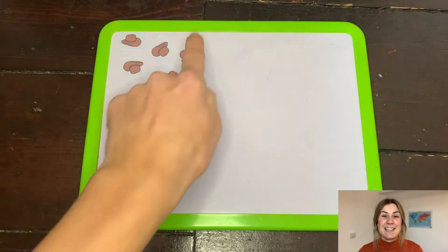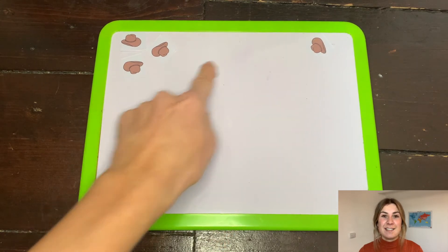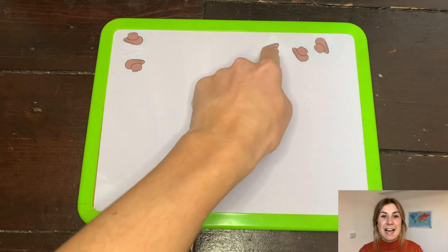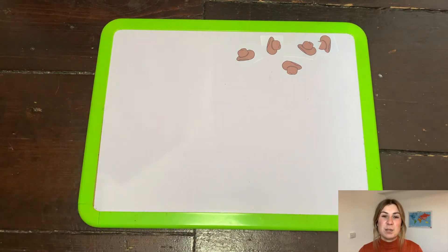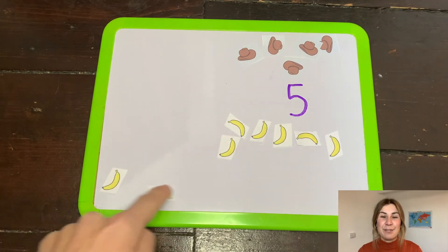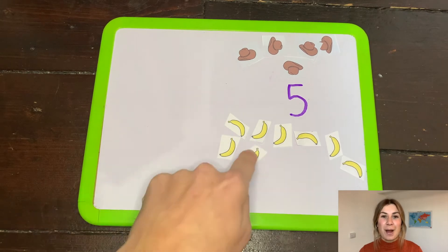Some children may find it easier to physically count out the objects. You could carefully cut out all of the pieces and get your children to count each object one at a time. They can then fill in the worksheet or write the answer on a whiteboard.